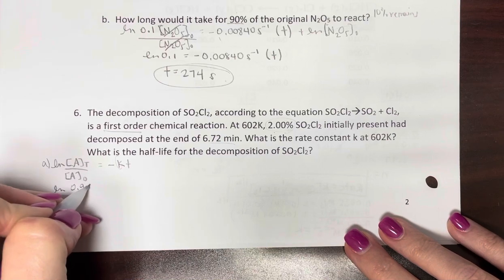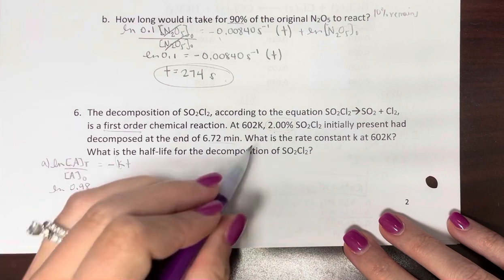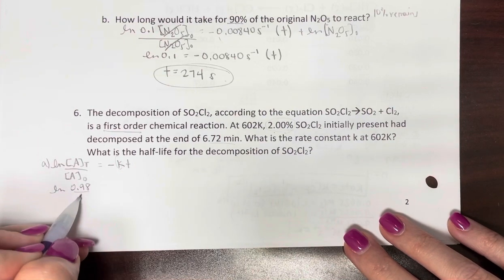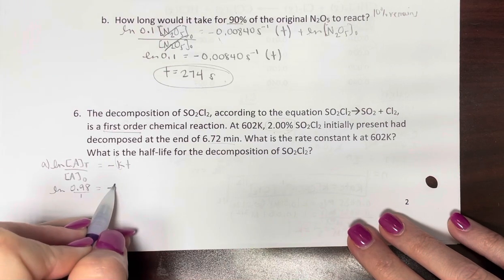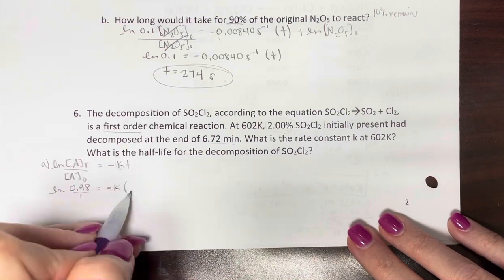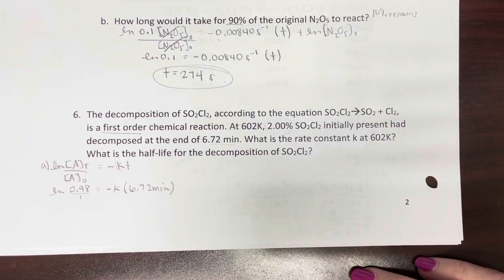And when we're in fractions, we always start with 100%, right? So you can put over 1 equals negative k times, what's our time? 6.72 minutes. Just keep track of your units of time.